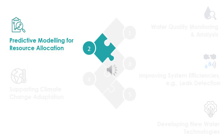Predictive modeling is being used to forecast future water demand based on variables like industrial growth and urban expansion, as well as to calculate future water availability by analyzing trends in rainfall, snowmelt, or other sources.